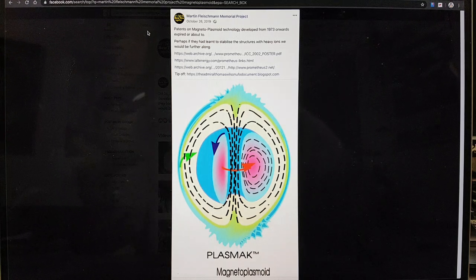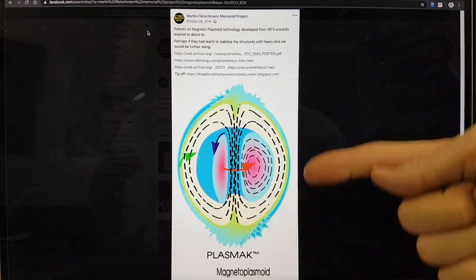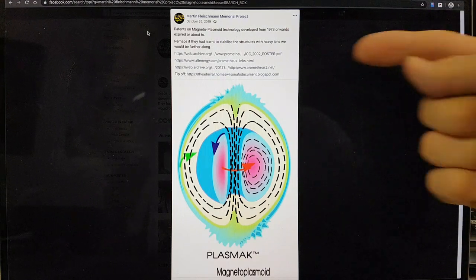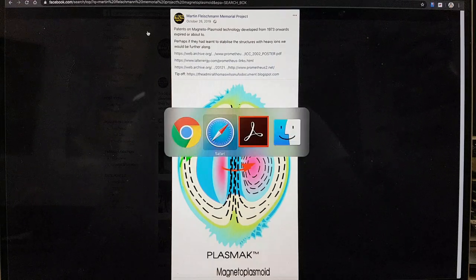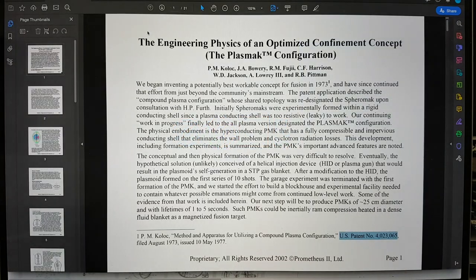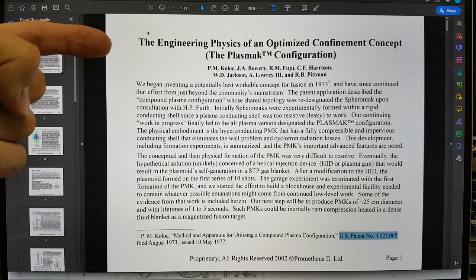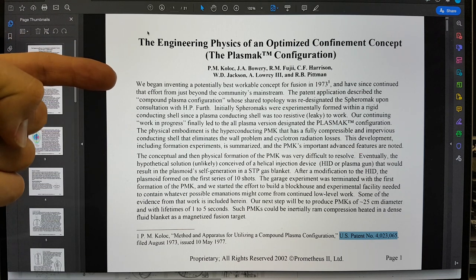Hi, my name is Bob Grinia and I'm a volunteer with the Martin Fleischmann Memorial Project. I shared this document on October 26th, 2019. I was given a tip-off by someone and I have looked at its presentation here. It's about the engineering physics of an optimized confinement concept, the plasmic configuration. We began inventing a potentially best workable concept for fusion in 1973.